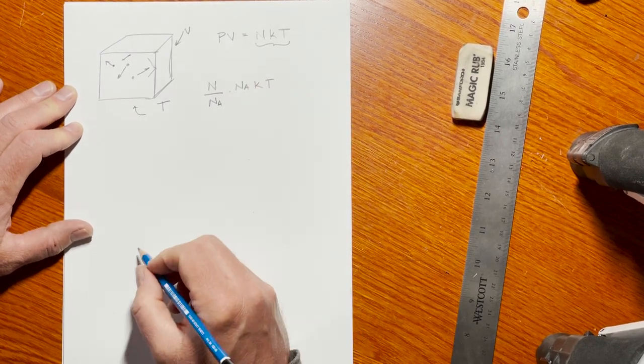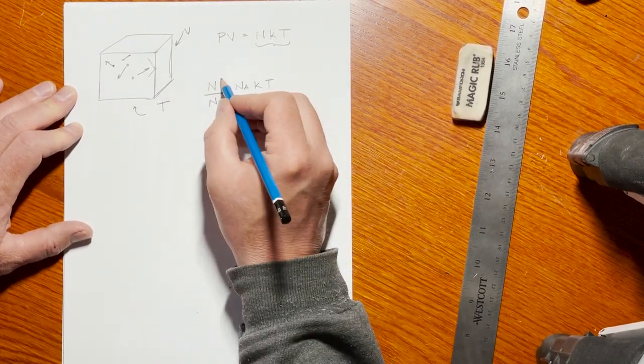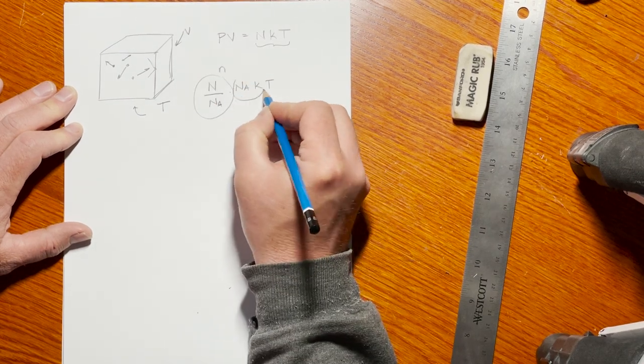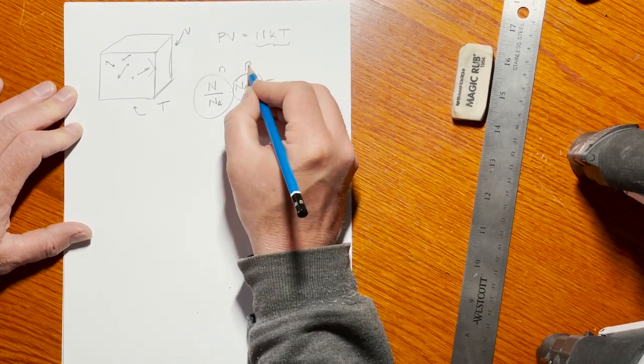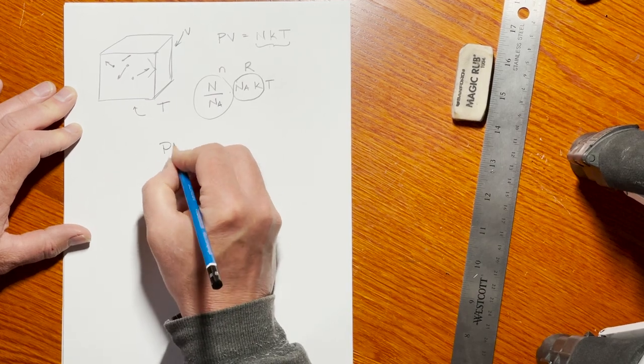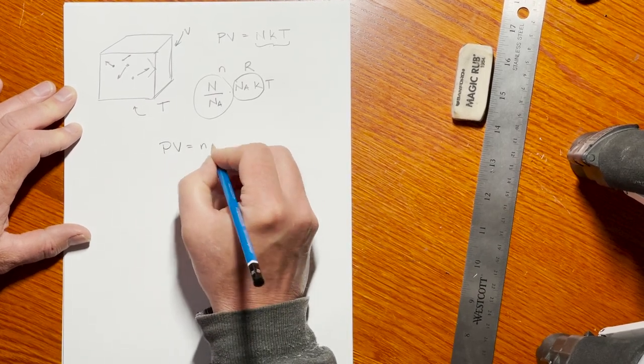I just put in NA over NA there. This is the number of moles n. We're going to redefine this as a new constant called R, and you may have seen this in your chemistry classes: PV equals nRT.